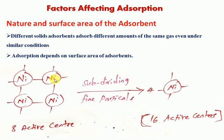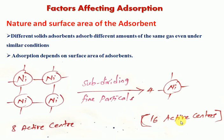For example, the solid surface of nickel initially contains 2 active centers, forming 2 bonds. There are 8 active centers total, forming 8 bonds. When we crush or sub-divide the nickel into 4 smaller pieces, each piece has 4 active centers, giving 4 into 4 equals 16 active centers. So the active centers increase, the surface area increases, and therefore adsorption also increases. In summary: for the adsorbent, as surface area increases, adsorption also increases.